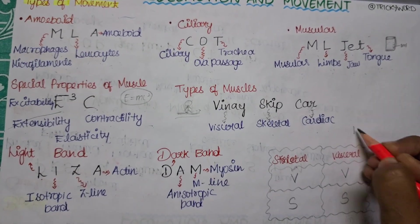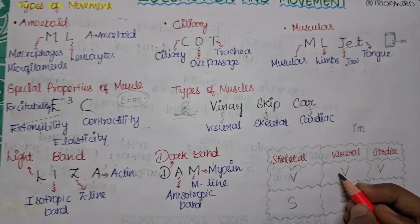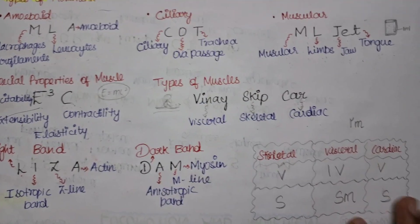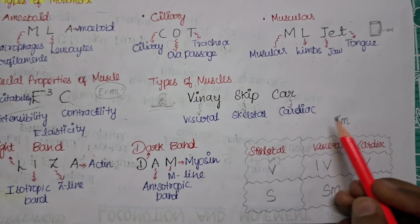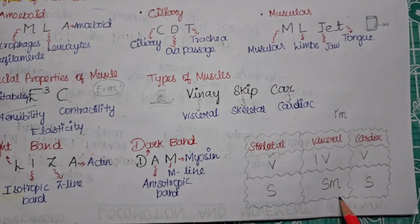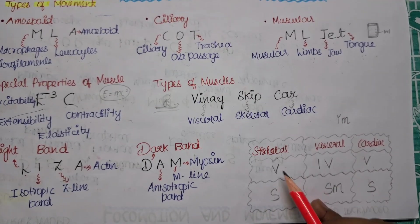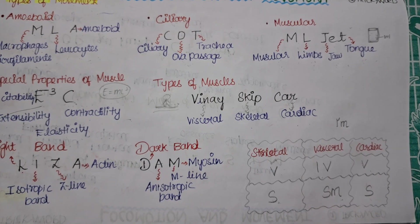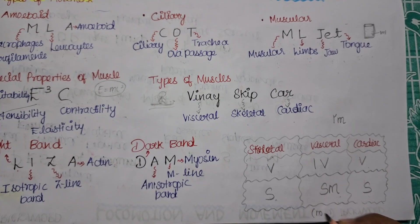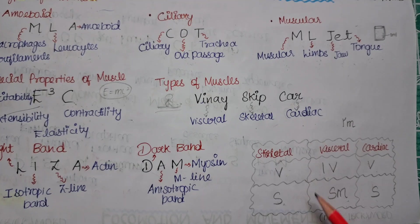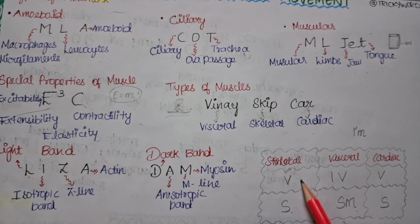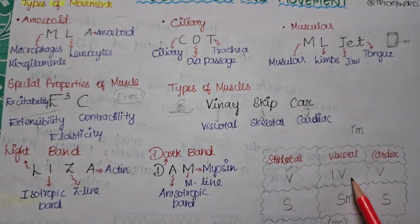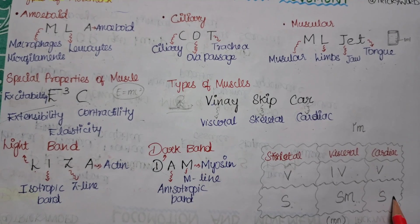Now you need to add two things. You need to add IV here and SM here. IV means involuntary, V means voluntary, S means striated muscle, SM means smooth or non-striated muscle. So skeletal is voluntary and striated, visceral is involuntary and smooth, and cardiac is involuntary and striated.